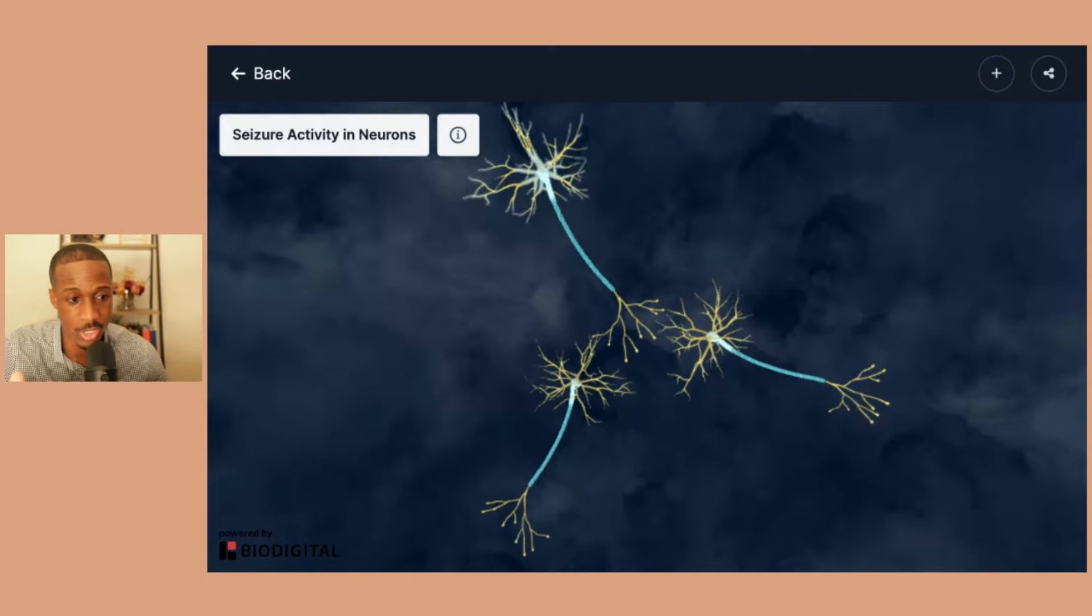What's happening with seizures is that seizures are essentially an abnormal hyperactive brain activity where the excitatory signals of the brain cells are very much hyperactive. And as a result, the neuron does not experience the normal rest periods that it needs between signals of transmission. As the neuron communicates with other neurons, there's always going to be a period where it's not activated.